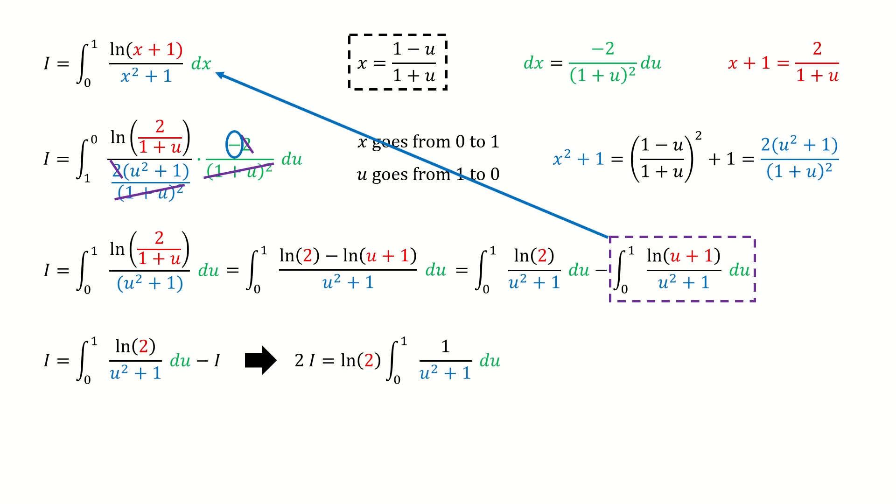And then we add I on both sides, and take the log 2 out of the integral. So this integral is simple, we just integrate it. After plugging numbers, we got here. And note for this factor 2. After we divide 2 on both sides, we got this final answer.